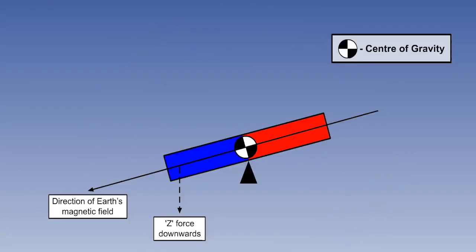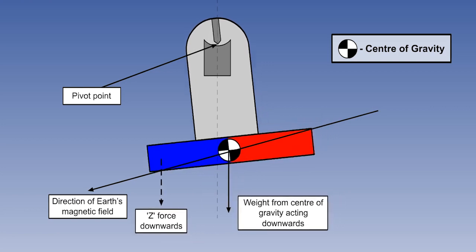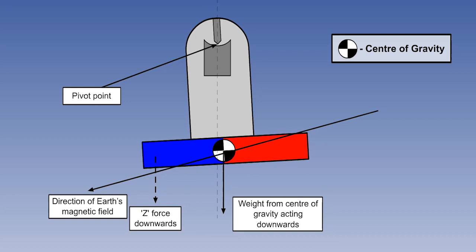A non-pendulously suspended magnet would take up the inclination of the local dip, like this. By suspending it from above, on a sharp pin sitting in a smooth, hard cup, we displace the centre of gravity from the centre. This produces a self-levelling mechanism. The centre of gravity will seek the lowest point.